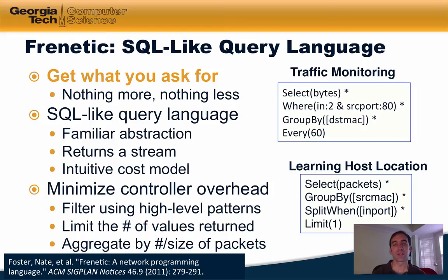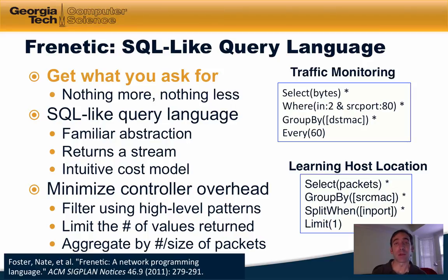In this case, the programmer would like to see packets grouped by the source MAC address, but have those packets split when the input port changes. The programmer does not need to see every packet, but rather only the first packet that is sent when the input port changes. This function can be achieved by applying the limit primitive over the query, which indicates that the control program should only see the first packet.